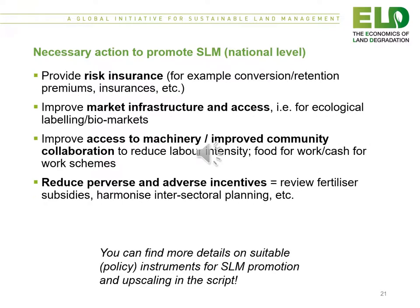Additional national-level actions include providing risk insurance such as conversion or retention premiums and insurances. Improving market infrastructure and access for ecological labelling and biomarkets. Improving access to machinery and improved community collaboration to reduce labour intensity, using things like food-for-work or cash-for-work schemes. And reducing perverse and adverse incentives — for example, reviewing fertiliser subsidies and harmonising intersectorial planning.